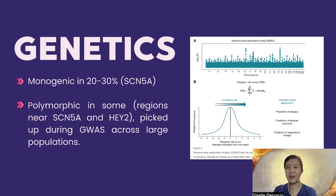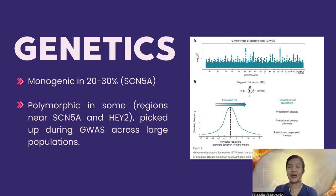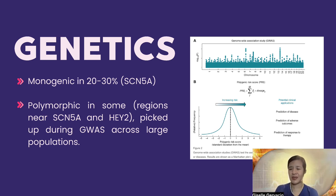SCN5A has been documented in 20% of Brugada syndrome cases. Genome-wide association studies have revealed polymorphisms in regions near the SCN5A and H2 regions.